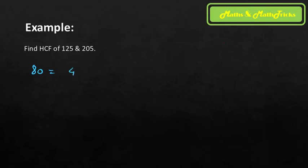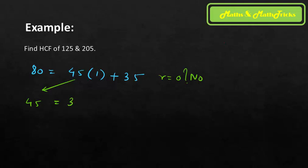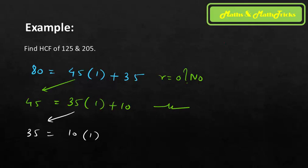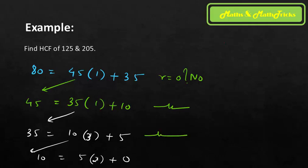Step 3: 80 = 45 × 1 + 35. Remainder is 35, still not zero. Step 4: 45 = 35 × 1 + 10. Remainder is 10, still not zero. Step 5: 35 = 10 × 3 + 5. Remainder is 5, still not zero. Step 6: 10 = 5 × 2 + 0. Remainder is 0 — we stop here.